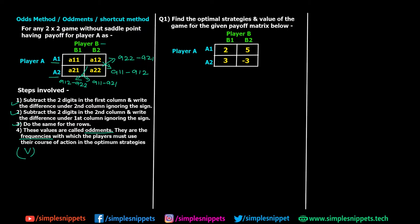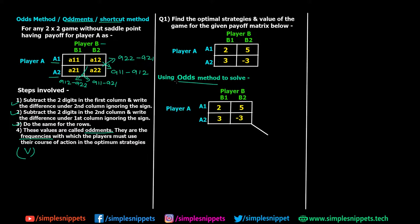Let's look at an example. Find the optimum strategy and value of the game for the given payoff matrix. I've taken a two-by-two matrix so we can directly use the odds method. For the first row, we do five minus two — we take the larger value minus the smaller value and ignore the sign — so five minus two equals three, and we write that here.